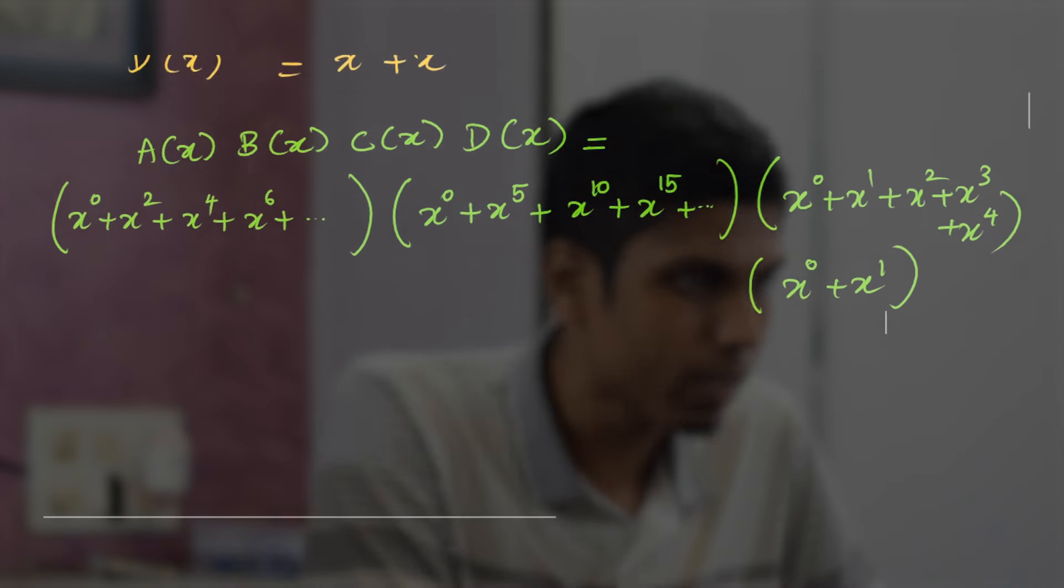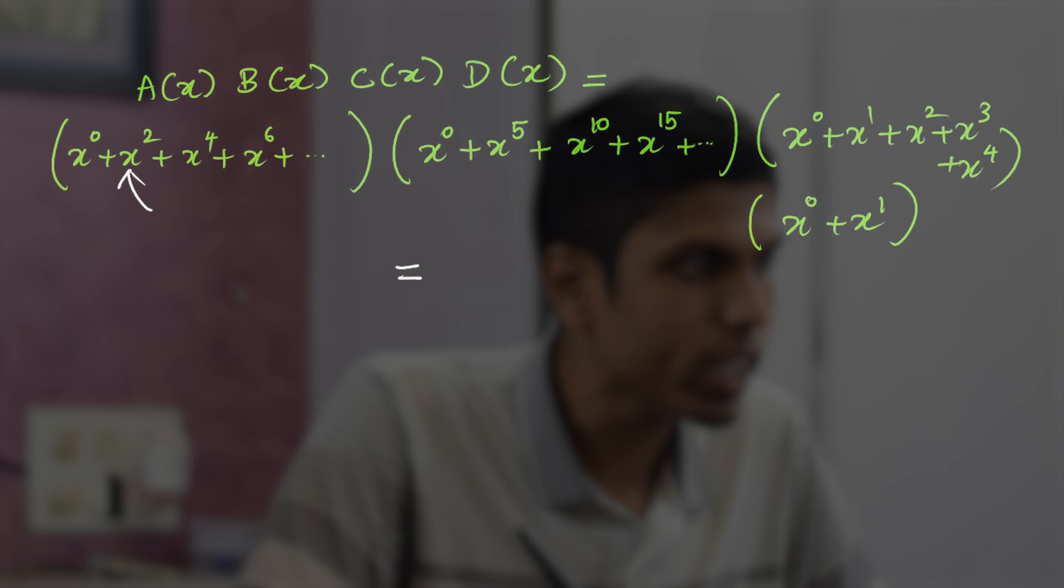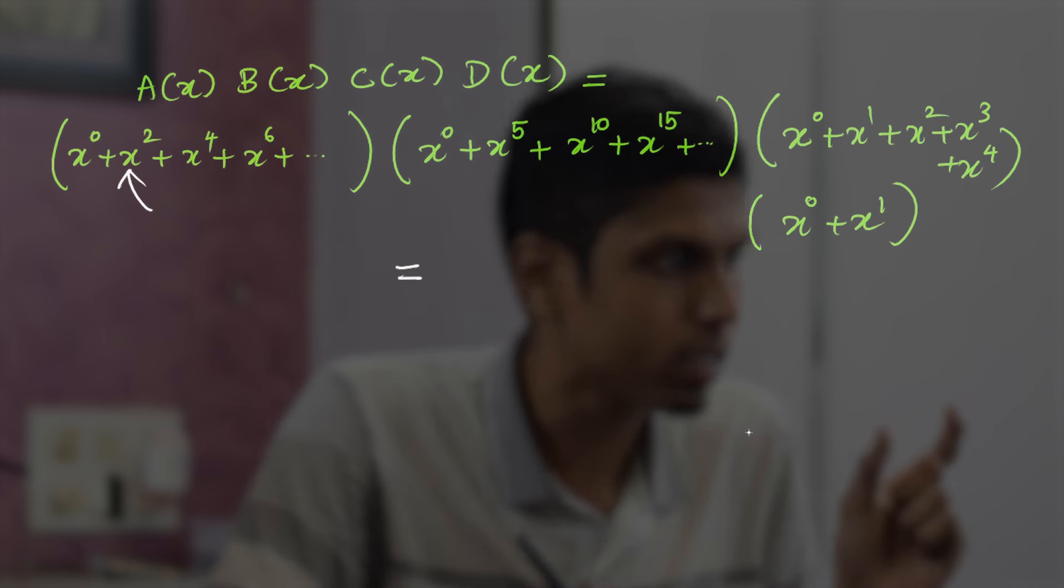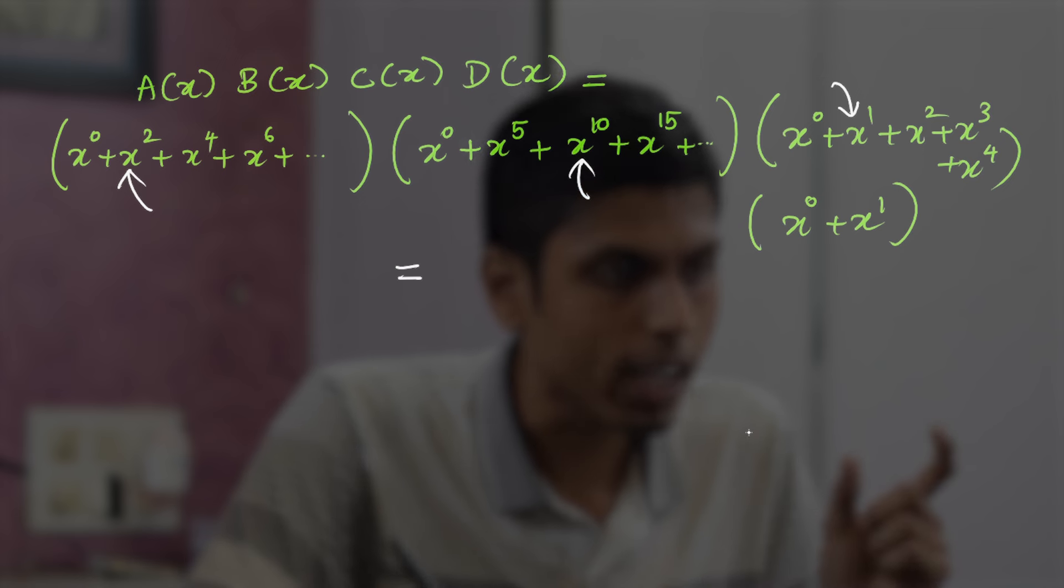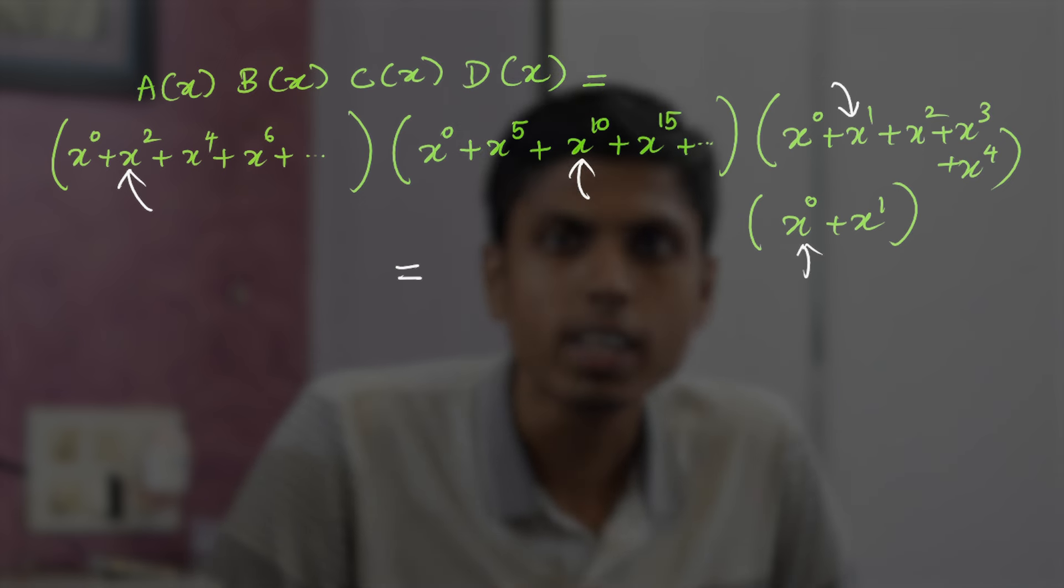Remember, the distributive law says that when you have certain factors that are getting multiplied, you take each term of that factor and put it all together to form a particular term in the expansion. For example, one of the terms in the expansion can be obtained by choosing x^2 and x^10 and x^1 from C(x) and x^0. So this is how the expansion in algebra works. This is by virtue of the distributive law.